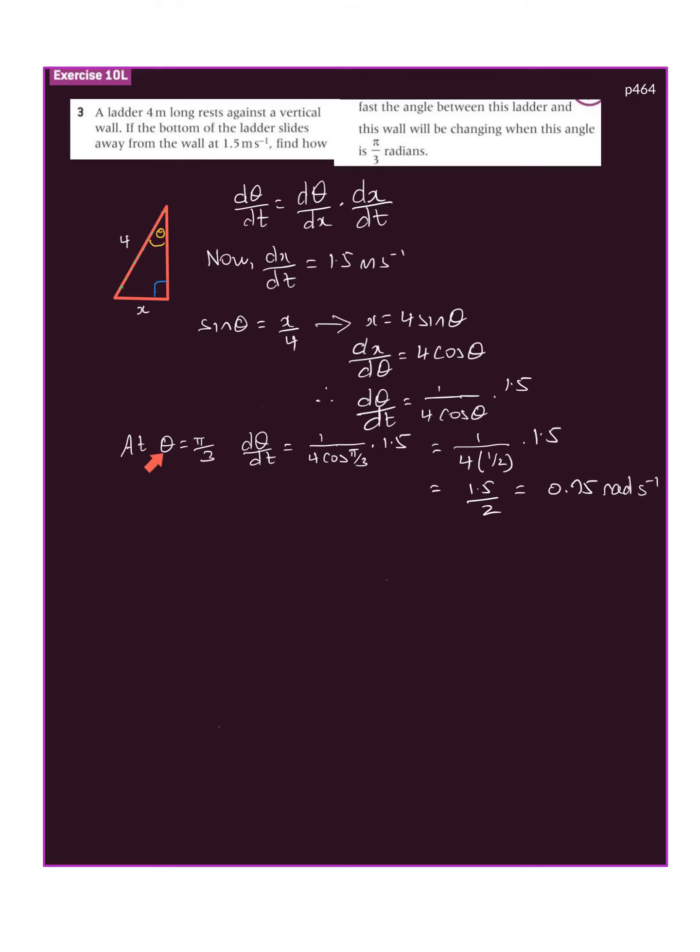They asked to find the rate at θ = π/3. So dθ/dt = 1/(4 cos(π/3)) × 1.5.